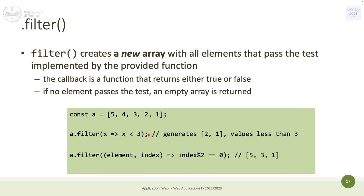The callback is defined as a parameter, or you can define a function outside and use it inside filter. For example, filter to keep only elements less than 3: from the array [5, 4, 3, 2, 1], five, four, and three are excluded; one and two are included. The new array from filter contains [1, 2] in the same order as in the original array.